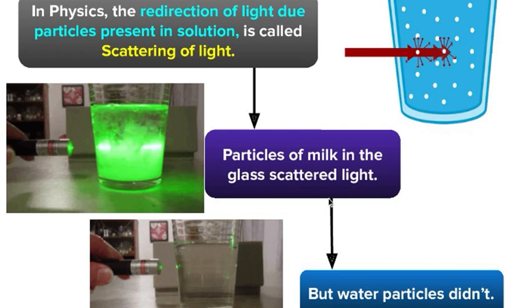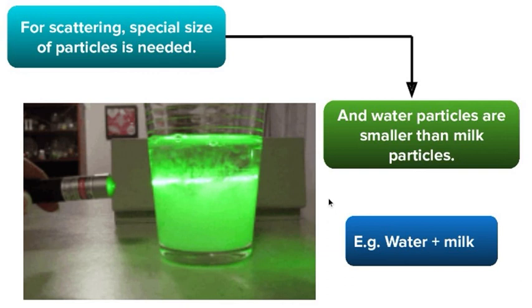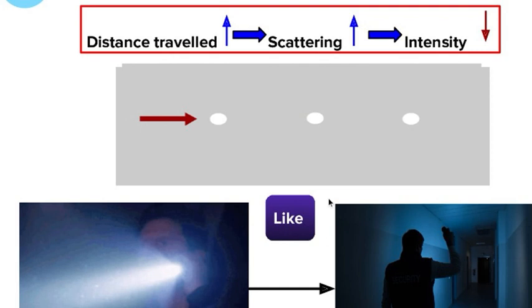Particles of milk in the glass scattered light, but water particles are smaller. Coming back to our sky theory: distance traveled is more, scattering is more, but intensity will be less. In the atmosphere, scattering happens. We know our white light has violet, indigo, blue, green, yellow, orange, red. As per wavelength, violet, indigo, blue have low wavelength, whereas red, orange, yellow have high wavelength. If the intensity is less, scattering is more. Red, orange, yellow don't scatter much, but violet, indigo, blue scatter a lot because they have low wavelength.